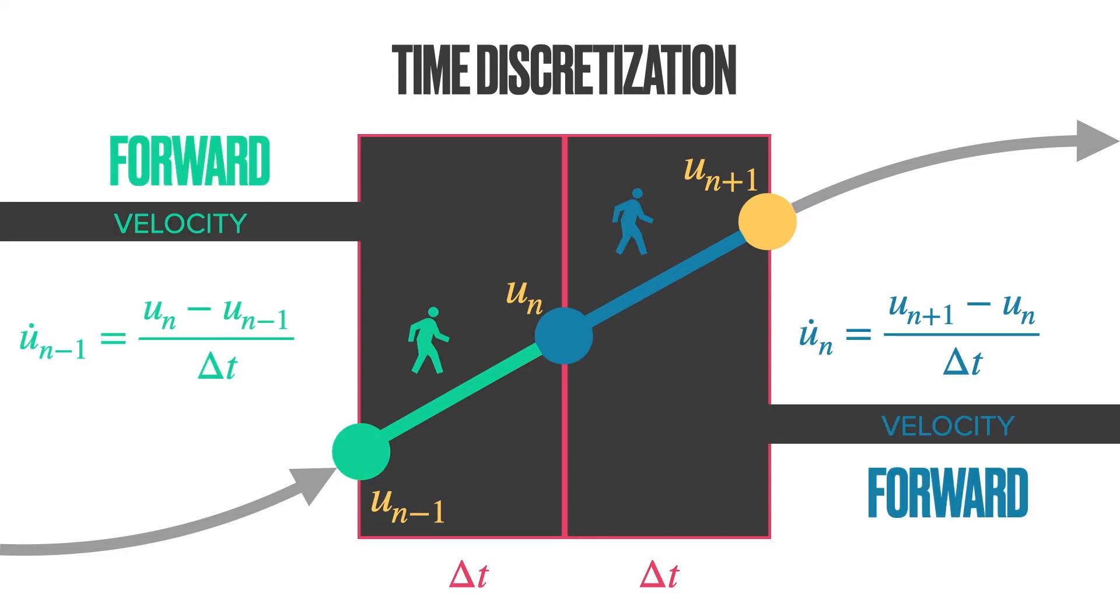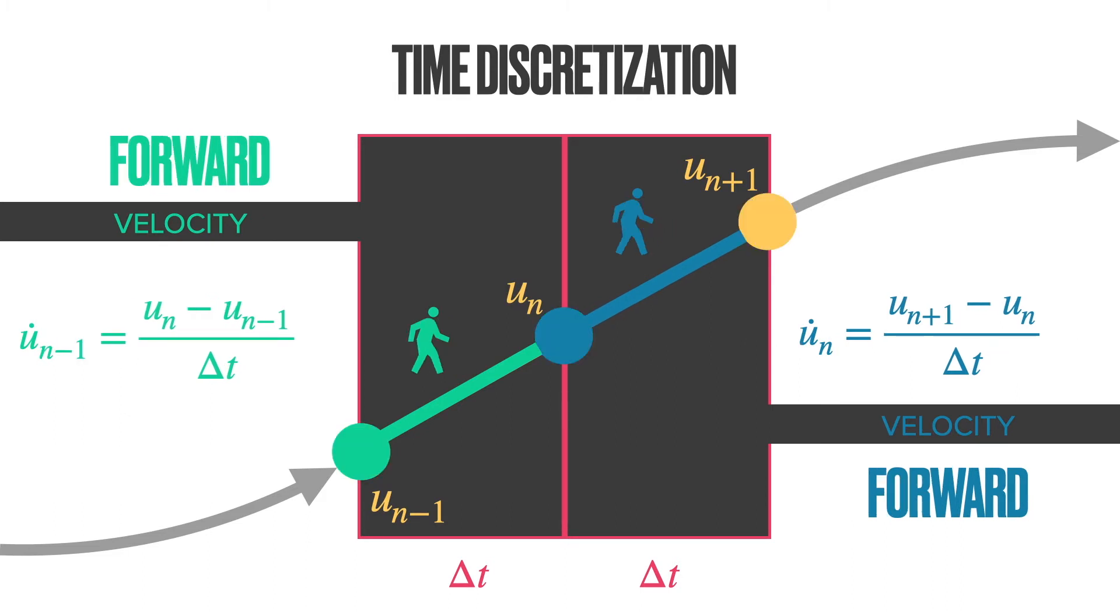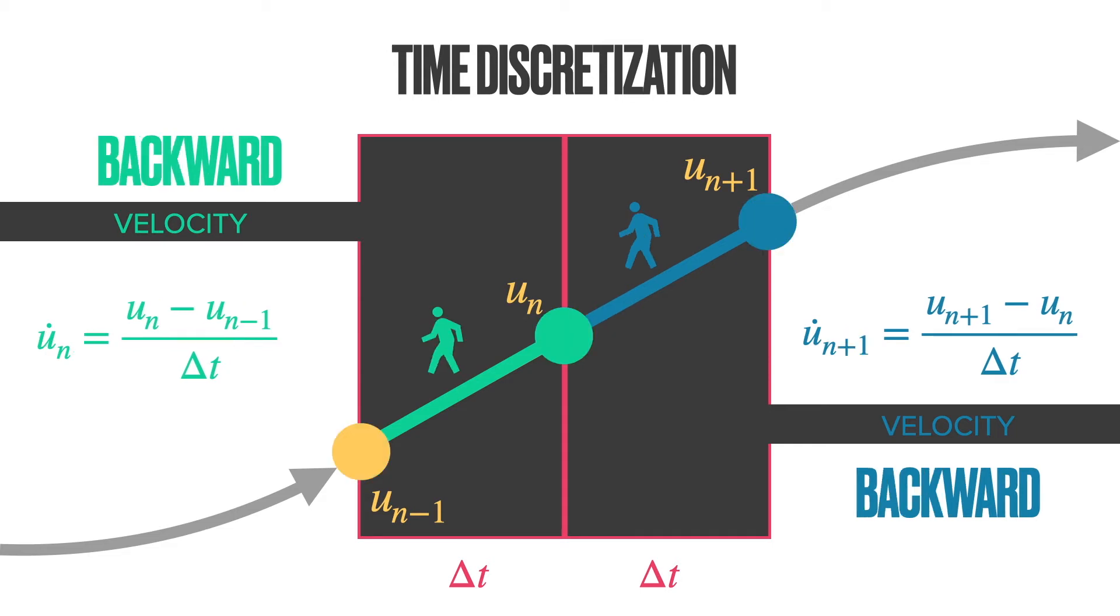We have the so-called forward difference, where we assign the difference un-un-1 divided by delta t to the velocity at un-1, which is the forward difference. And we also have the backward difference. We assign the same difference, un-un-1 divided by delta t, to the velocity at n. This is why it's called the backward difference.